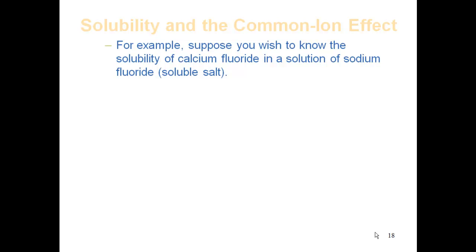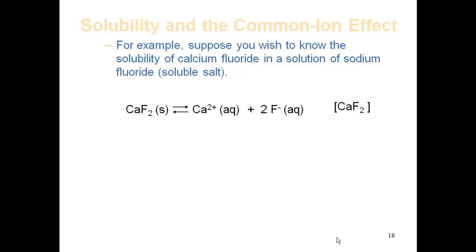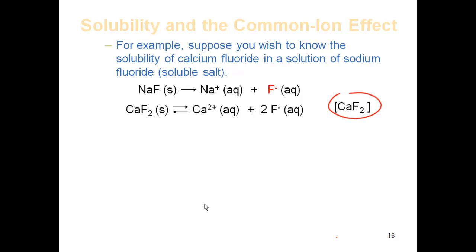Suppose you wish to know the solubility of calcium fluoride in a solution of sodium fluoride. We have our insoluble salt, calcium fluoride, and we're going to add a soluble salt in its presence. The calcium fluoride equilibrium gives calcium ions and fluoride ions in a one-to-two ratio, with a molar solubility already calculated as 2.0×10⁻⁴ molarity. Now, if I add sodium fluoride — a soluble salt — it breaks up into sodium and fluoride ions, giving me excess fluoride ions that will affect this equilibrium.